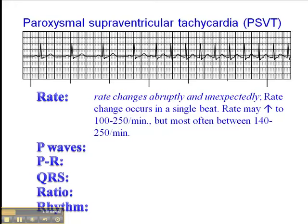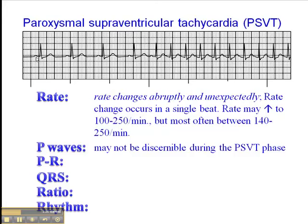The rates may increase to 100 to 250 beats per minute, but most often they're between 140 and 250 beats per minute. The criteria is that the tachycardic phase can be as slow as 100 beats per minute, as long as we see that abrupt change. The P waves may not be discernible during the PSVT phase, but they're visible here during the sinus rhythm phase, and the PR interval is normal where the P waves are discernible.